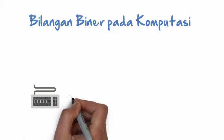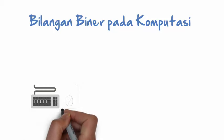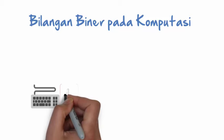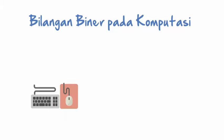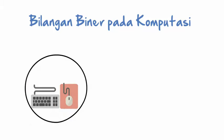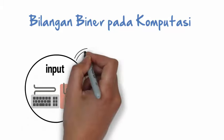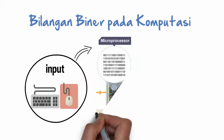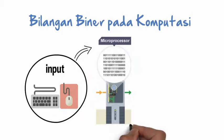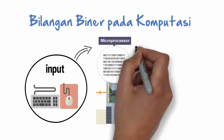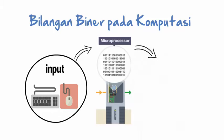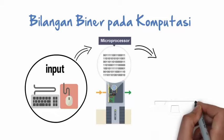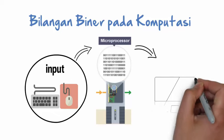Prinsip kerja komputer adalah menghitung susunan angka-angka yang disebut dengan bilangan binary. Jadi, sebenarnya komputer tidak mengenal data gambar, warna, suara, bahkan angka-angka. Untuk mengenal data ini, komputer mengubah semuanya menjadi bilangan binary.